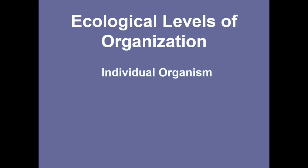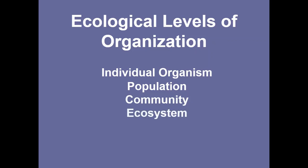We like to organize things in science, and we organize the ecological levels in the following way. We start with individual organisms, which combine together to make a population if they're the same species. Different populations put together become a community. Add the abiotic factors and it becomes an ecosystem. Put a lot of ecosystems together and they become a biome, and all the biomes in the world make up the biosphere. So we start with an individual organism and move up the chain.